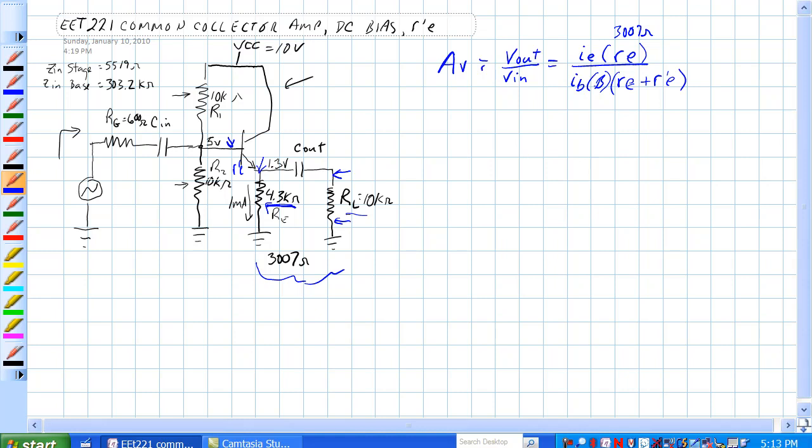So beta IB and IE are equivalent. So AV is equal to RE over RE plus R prime E. That's it. Well, this is an interesting circuit.